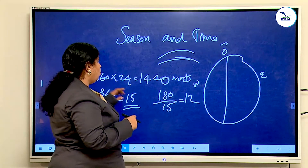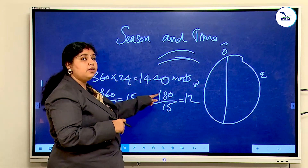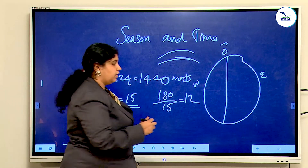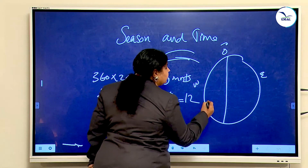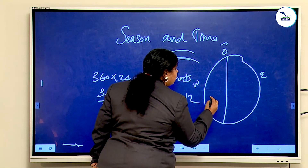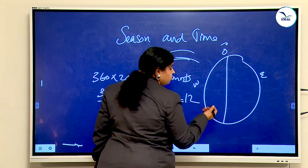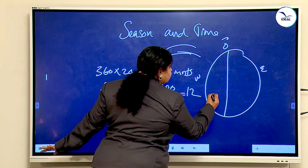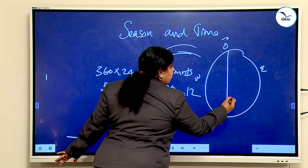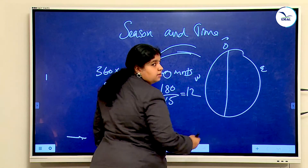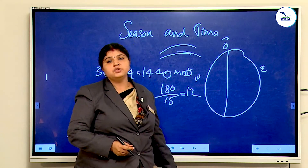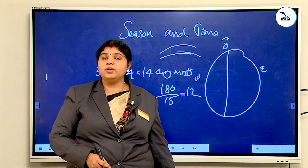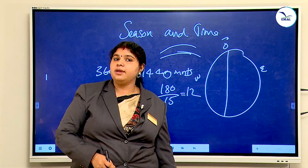In 180 longitudes, the earth completes the journey in 12 hours. So 12 hours on one side and 12 hours on the other side — 12 plus 12 equals 24 hours, which makes one full day.